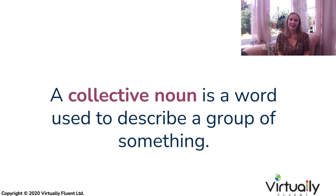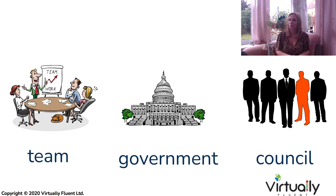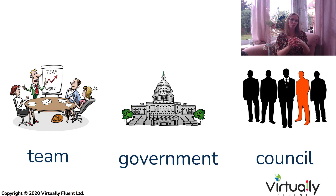A collective noun is one word which represents a group of people or things. Let's take some examples like a team, a government or a council. Each of these is made up of individual people or things. Let's take a team for example — you have three, four, maybe many more people inside that team. But we use the word 'team' as one collective word to describe all the people that it's representing. And it's the same with government and council.